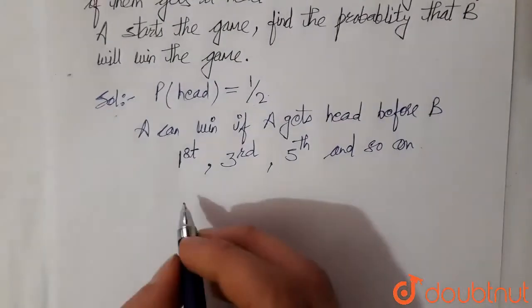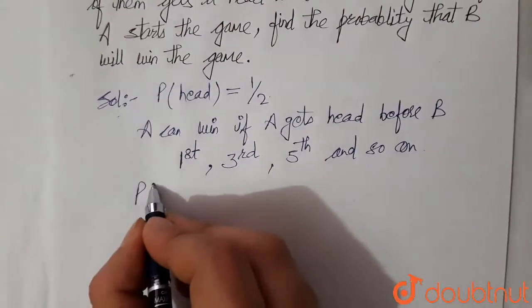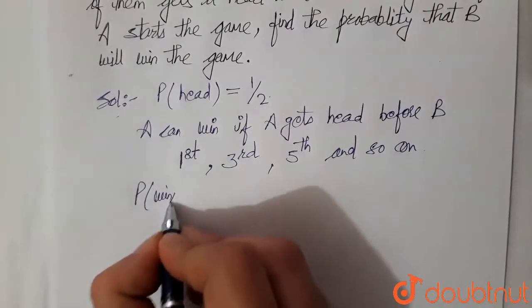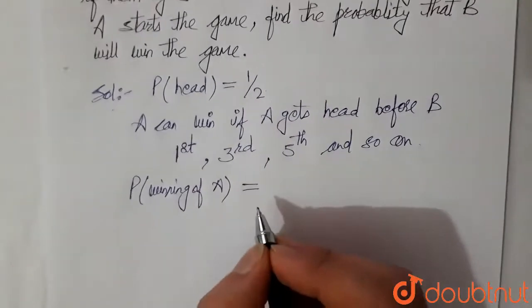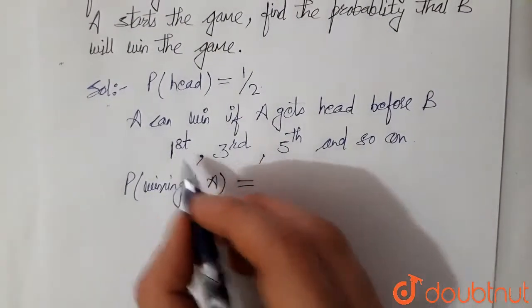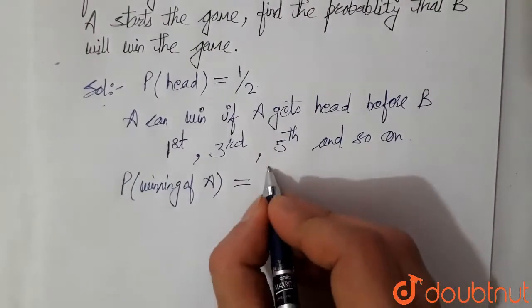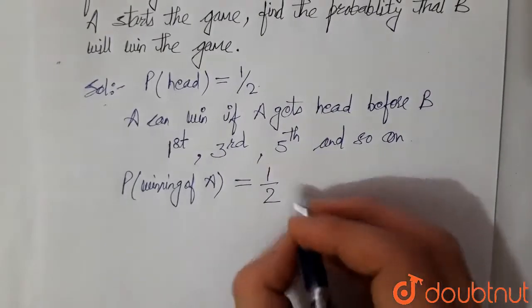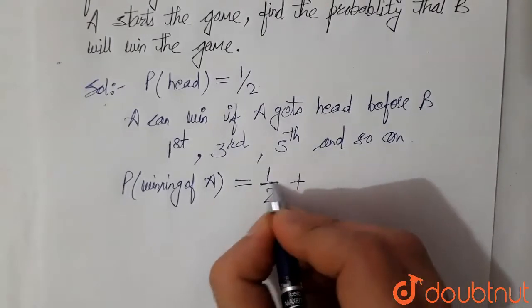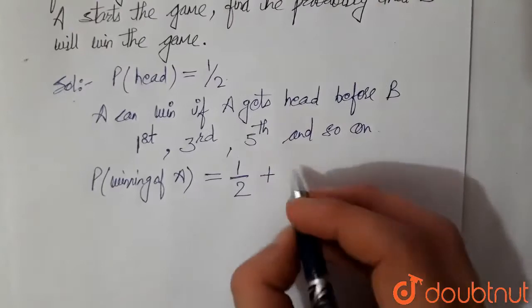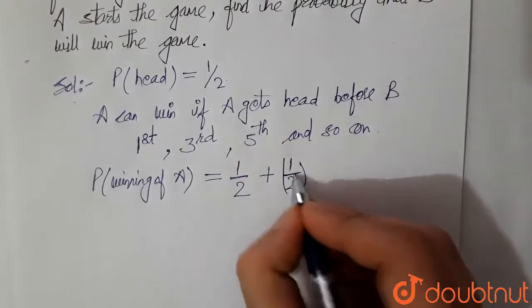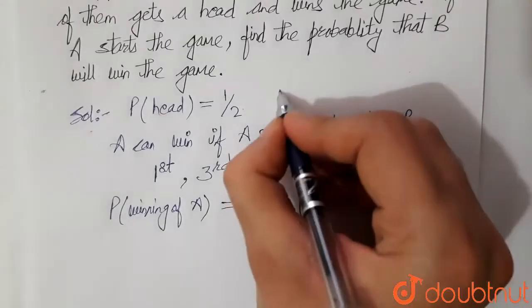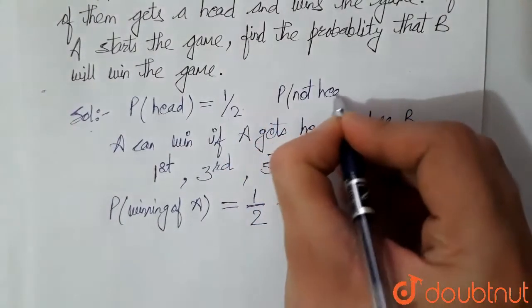So probability of winning of A is given as in the very first try, probability is 1 by 2, plus third try. Okay, so first try failed. Probability of not getting head is also the same, that is 1 by 2.